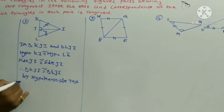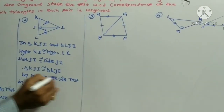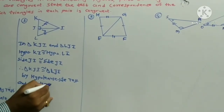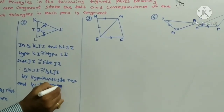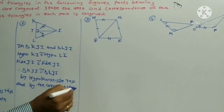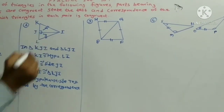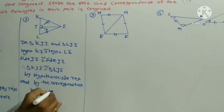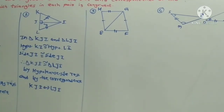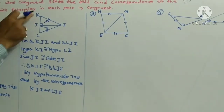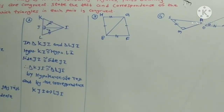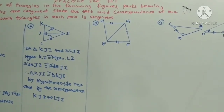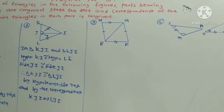By the Hypotenuse-Side test and by the correspondence, KJI corresponds to LJI. Both are right angle triangles and in right angle triangles, the hypotenuse-side test confirms congruence. Hypotenuse KI is congruent to hypotenuse LI, and by correspondence KJI corresponds to LJI.